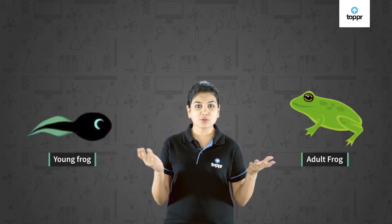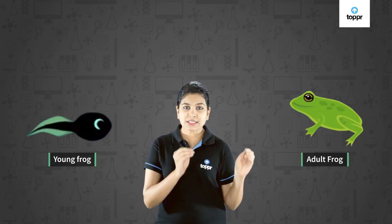For example, let's say a frog. This is a young frog and this is an adult one. Do you notice that they both look so different from each other? But if they look so different from each other, then how does the appearance of a young frog change so drastically when it becomes an adult one? Let's find out.